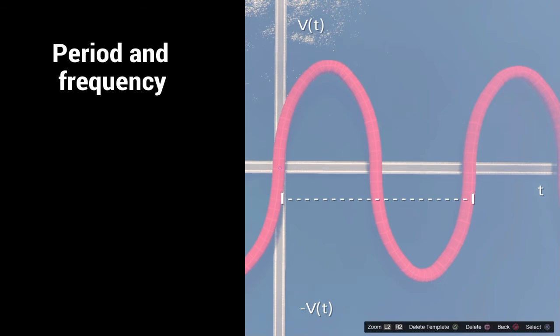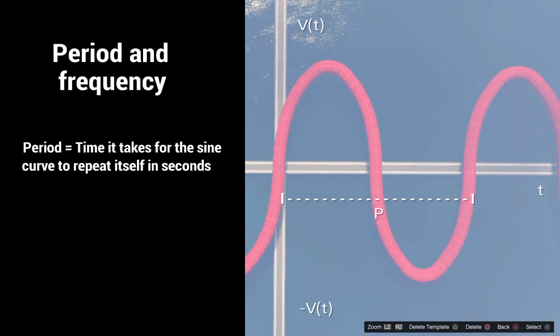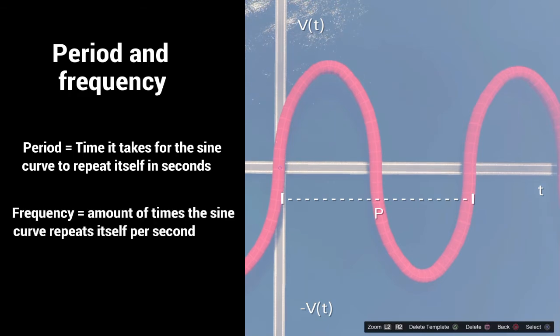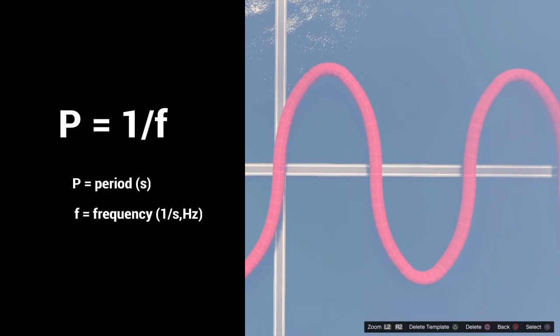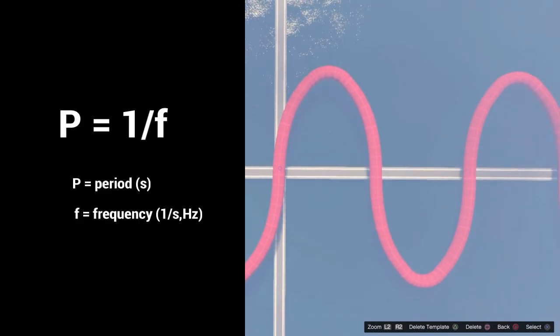Other things to consider are the period and frequency. The period is the time it takes for the sine curve to repeat itself once, while the frequency is the amount of times the sine curve repeats itself per second. Therefore we can define the period as 1 over the frequency.